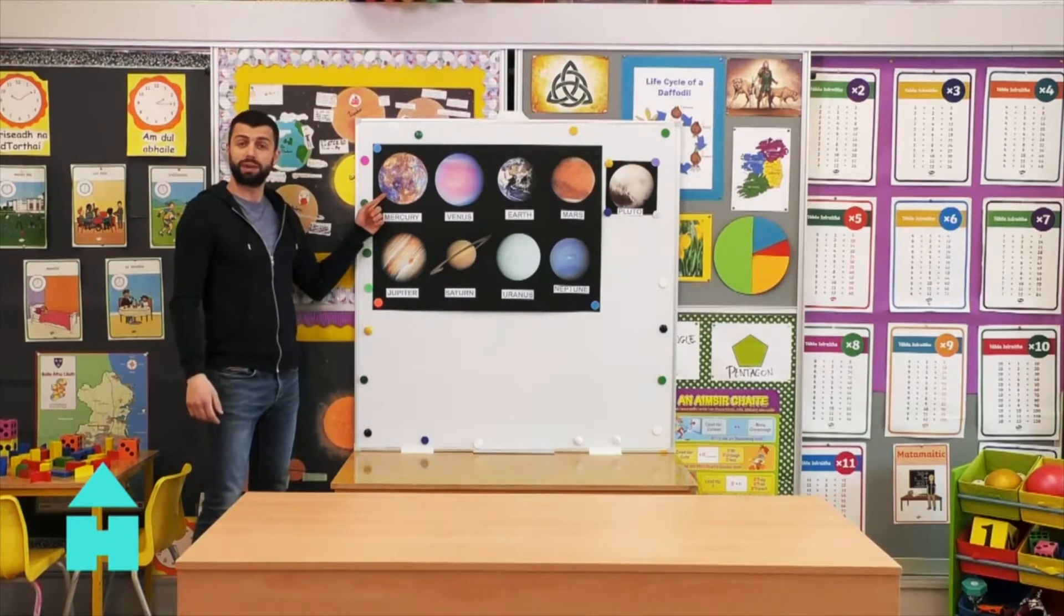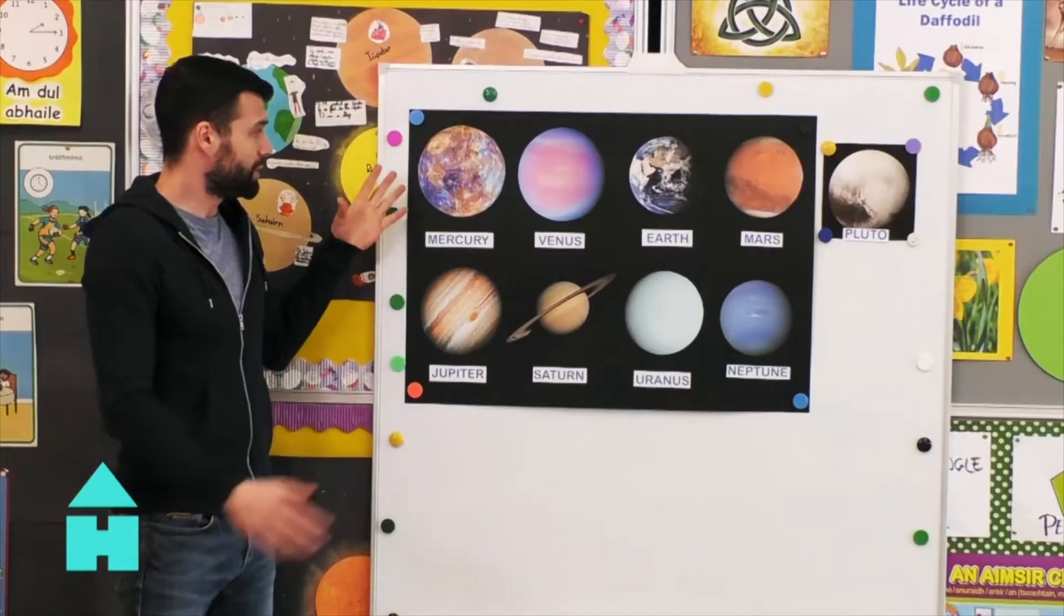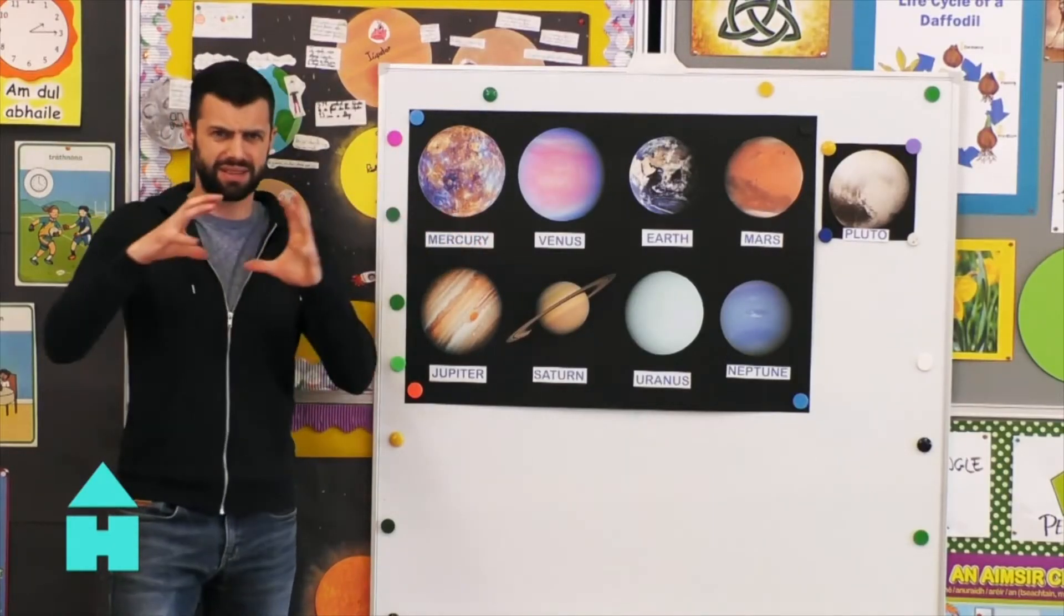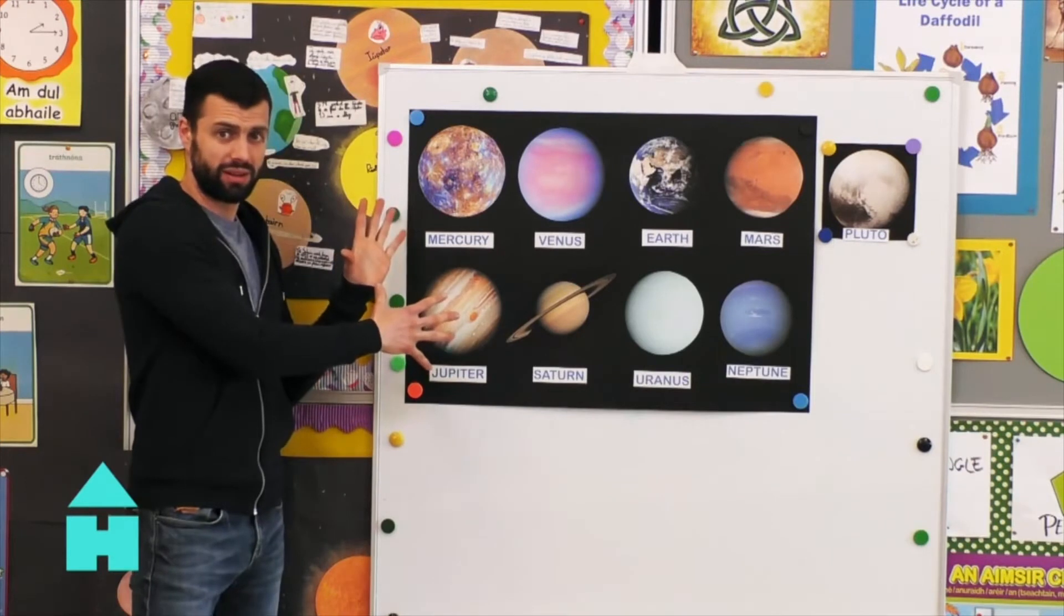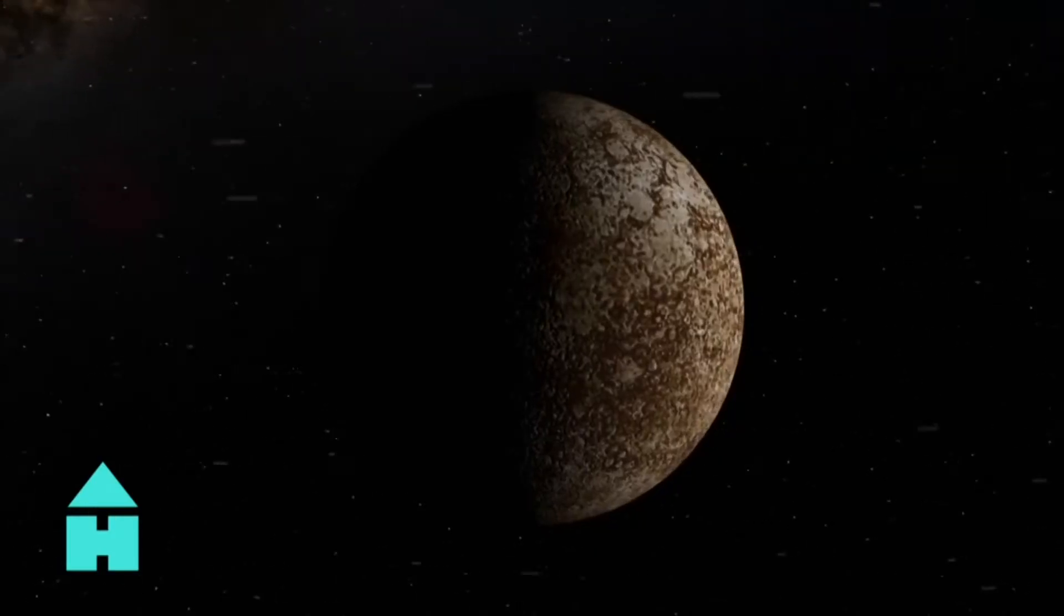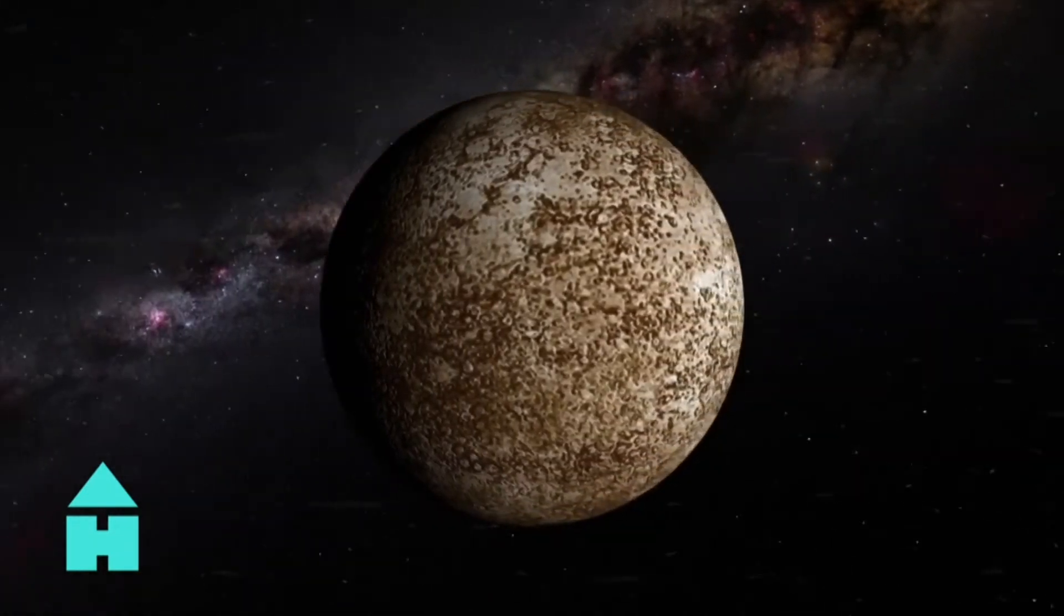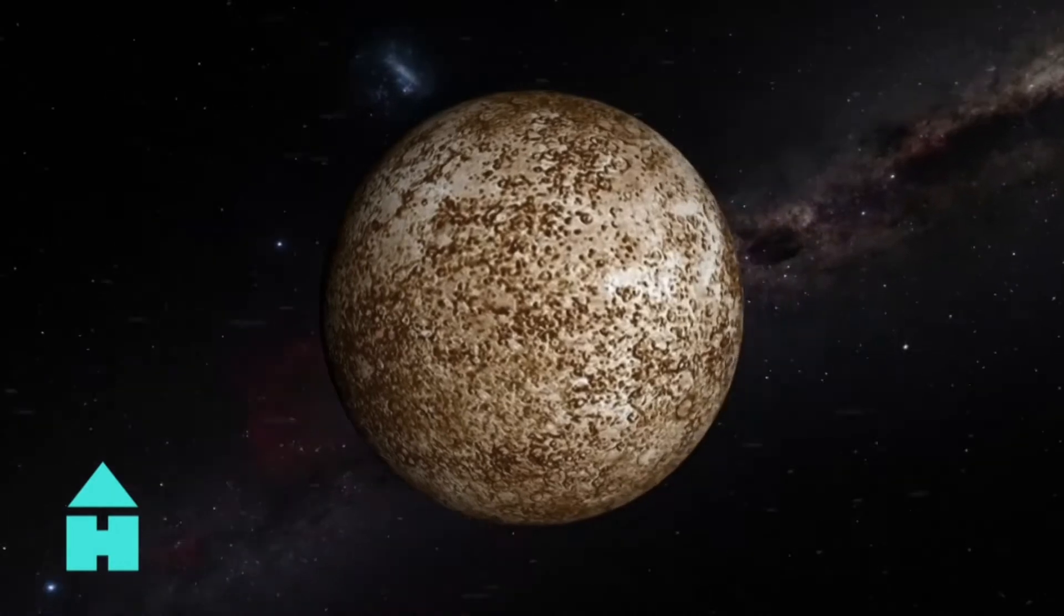We'll start with the planet Mercury. Looks pretty cool doesn't it? Now all these planets are the same size on this sheet of paper so you can get a good, proper look at them. But they vary greatly in sizes. The planet Mercury is the closest planet to the sun. It's also the smallest planet in our solar system.